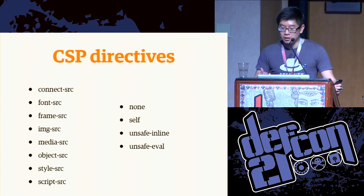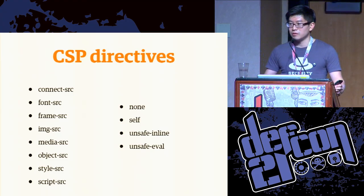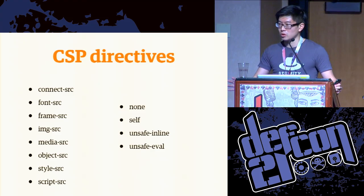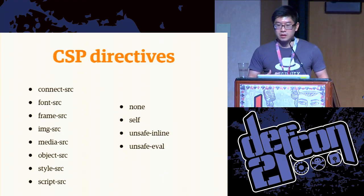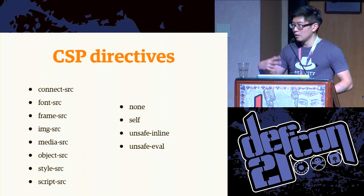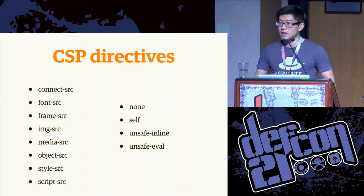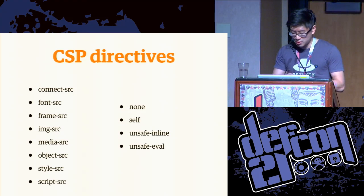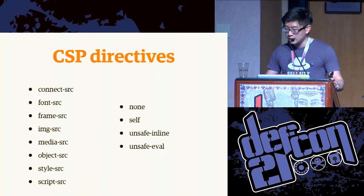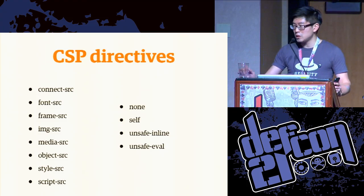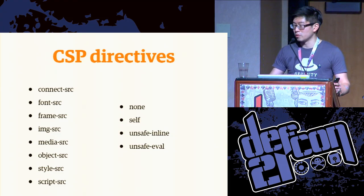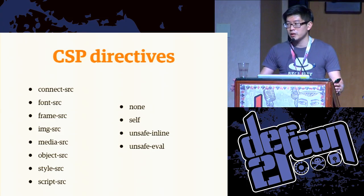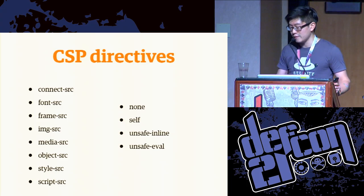For example, specifying a keyword of 'none' for a script-src directive tells the browser don't accept any sources — don't allow any JavaScript from any source. The 'self' directive is pretty self-explanatory: it basically says only allow content from the same name, subdomain and scheme. And 'unsafe-inline' and 'unsafe-eval' are special keywords that actually override the default functionality with regards to content security policy blocking inline JavaScript and eval.